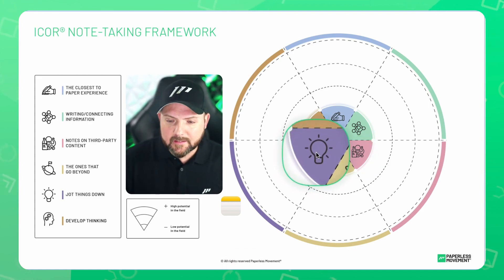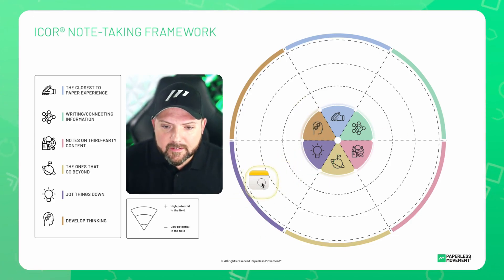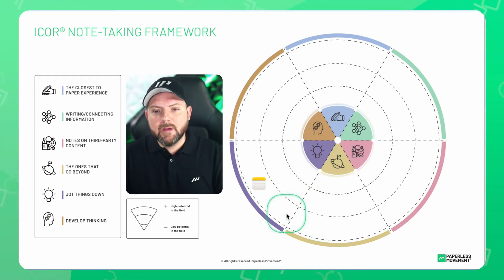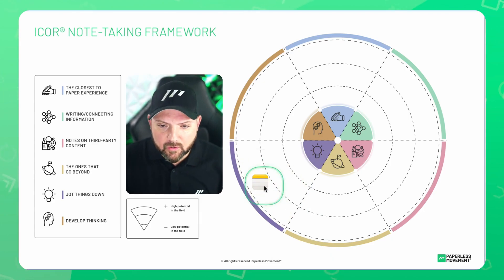So here we have jot things down. That's about really quickly to take some notes like you have a piece of paper and you write it down there. So for Apple Notes, obviously this could be on the very outside. The difference is if I would place it here, this would mean it's not so good in this section, and this means that's very good, and then we have a mid-term to make it really pragmatic to very quickly lay out your tools.